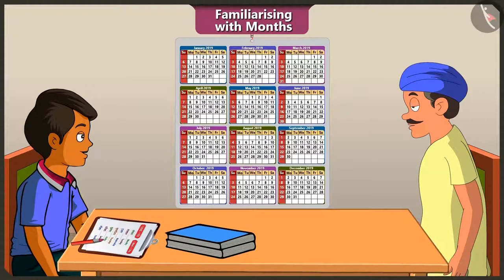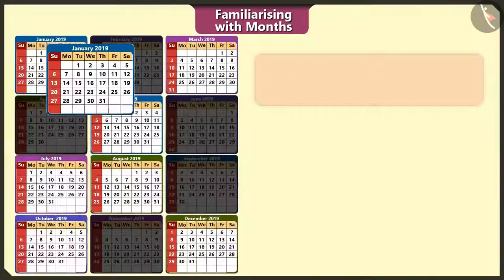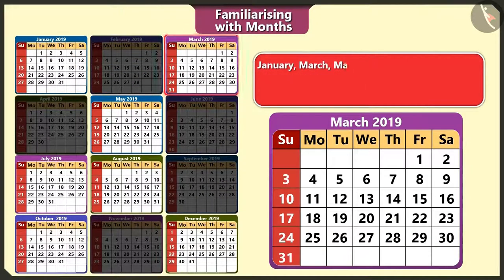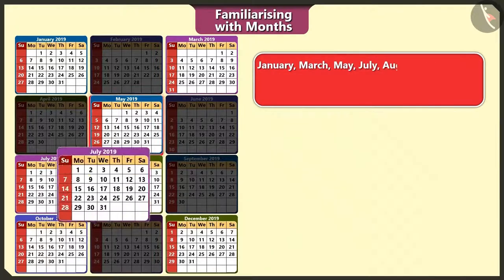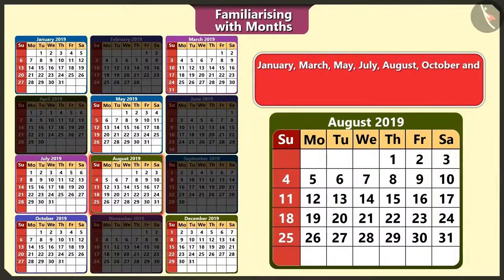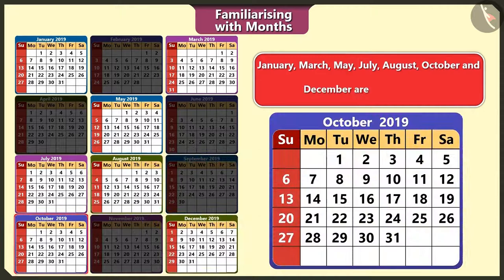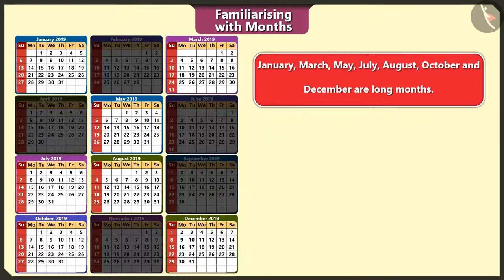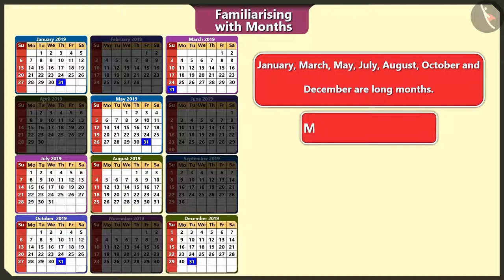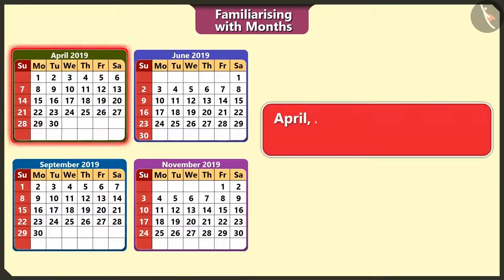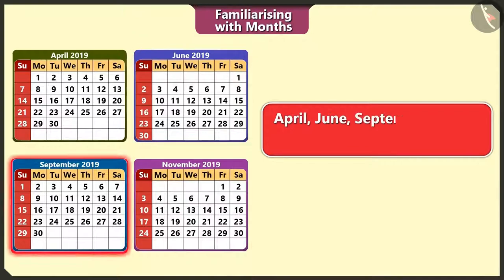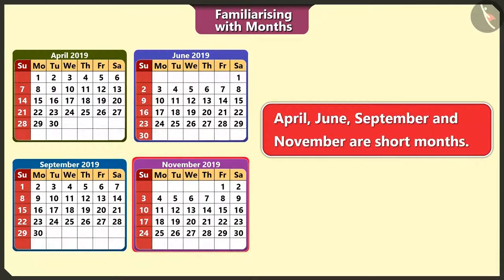Uncle, how many days are there in each month? The number of days in each month varies. For instance, January, March, May, July, August, October, and December are the long months — there are 31 days in these months. April, June, September, and November are the short months — there are 30 days in these months.